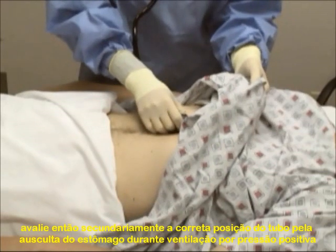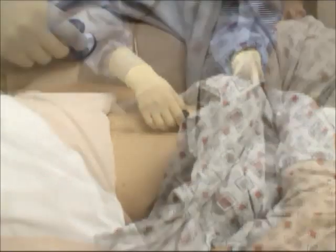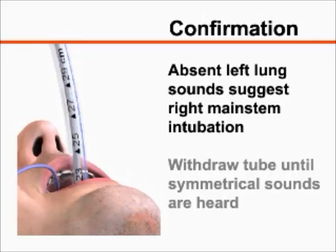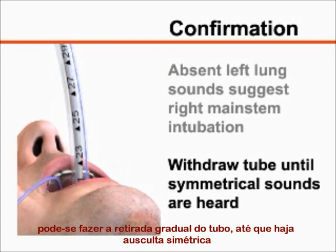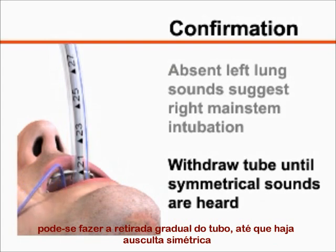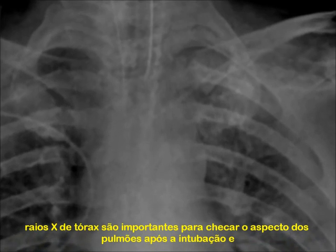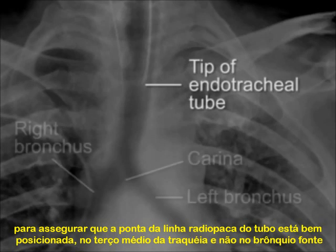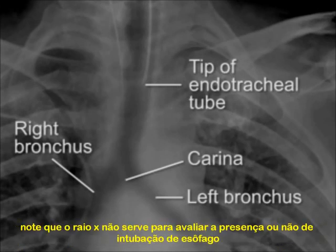Assess secondarily for esophageal tube placement by auscultating over the stomach during positive pressure ventilation. Auscultate both lungs in the mid-axillary line to assess for equal bilateral air movement. If breath sounds are diminished on the left side after intubation, you may need to gradually withdraw the endotracheal tube until symmetrical breath sounds are auscultated. Chest radiography is used to assess the patient's pulmonary status after intubation and to ensure that the tip of the radio-opaque line embedded in the endotracheal tube is well positioned at the level of the mid-trachea and not in either main stem bronchus. Note that radiography cannot be relied upon to detect esophageal intubation.